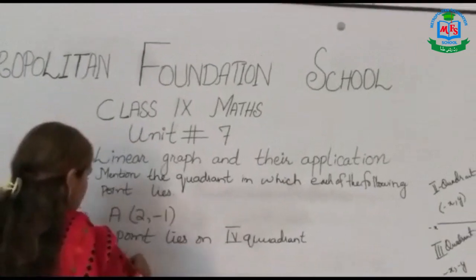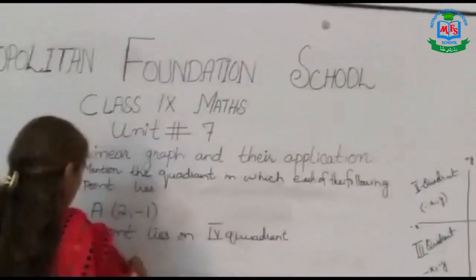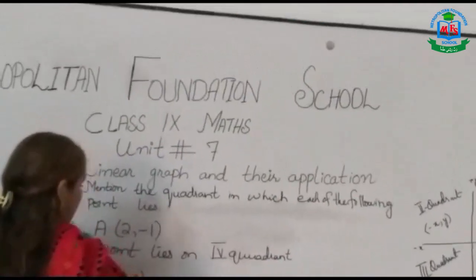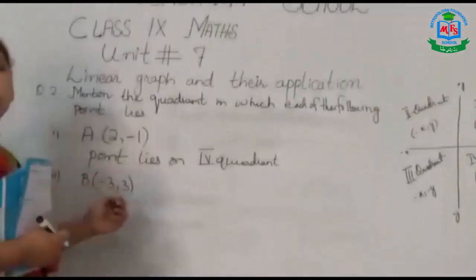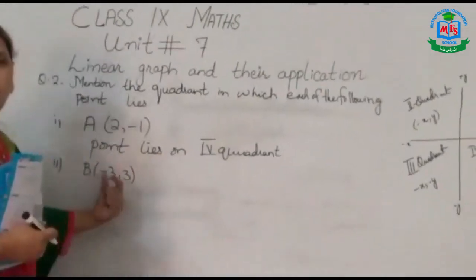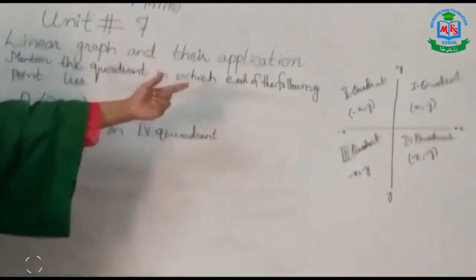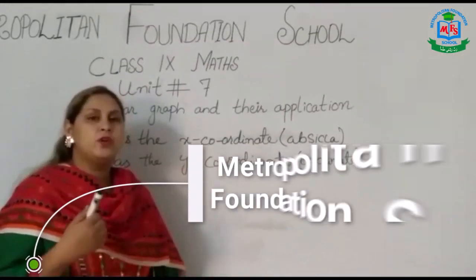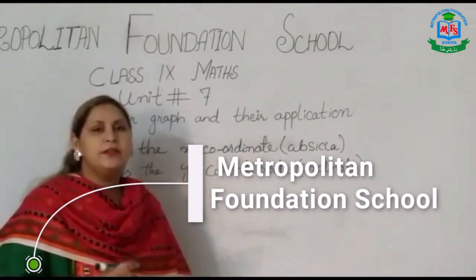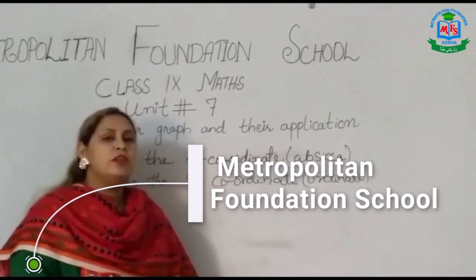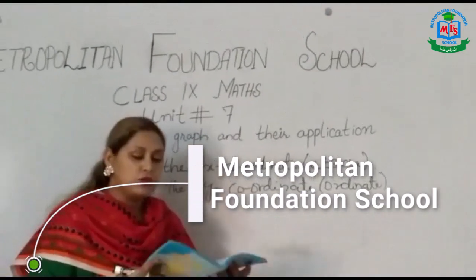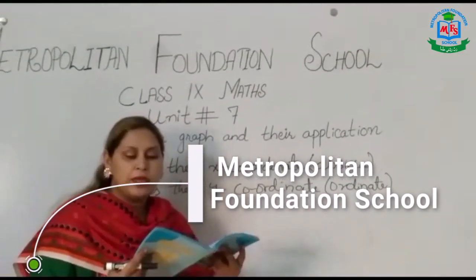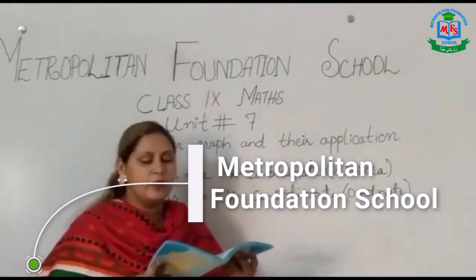The value of point B is minus 3, 3. Here x is negative and y is positive. We will go to our graph and see. Now we will go to question 1 side — in exercise 7.1, we will solve question 1.